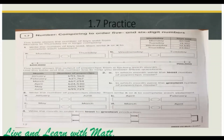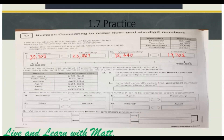I am going to do number 1 for you. This table shows the number of toys sold from Monday to Thursday by a large company. Number 1: write the number of toys sold, then write greater than or less than to complete each statement. For part A, 30,000 is greater than 20,000, so we write greater than. For part B, 12,000 is less than 19,000, so we write the less than symbol. Now do numbers 2 to 4 yourself and send it to me.